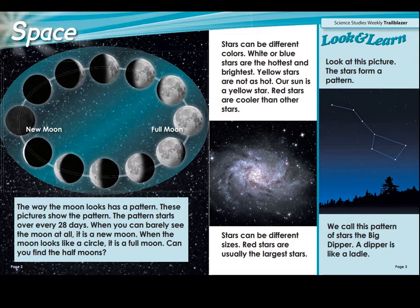Let's read about this. Stars can be different colors. White or blue stars are the hottest and brightest. Yellow stars are not as hot. Our sun is a yellow star. Red stars are cooler than other stars. At the bottom it says stars can be different sizes. Red stars are usually the largest stars. Think about that - usually the stars that are really big are red and they're not so hot. But the blue and white stars, some of them are big, many are smaller, and they are super hot.